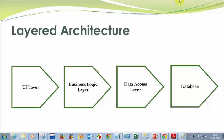Normally any application we design will have a UI layer, which is the user interface layer where you have HTML code, buttons, drop-down lists, and so on. We also have a business logic layer where you do calculations and business logic. The data access layer is the intermediate layer between the code and the database — it handles how to connect to the database.